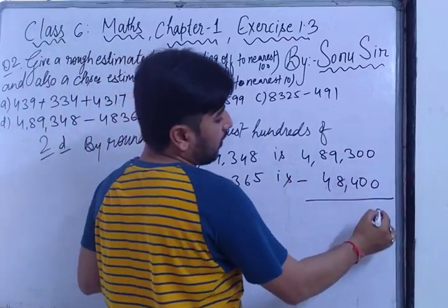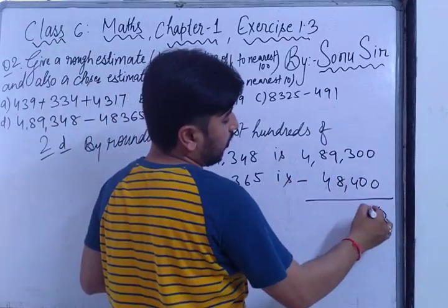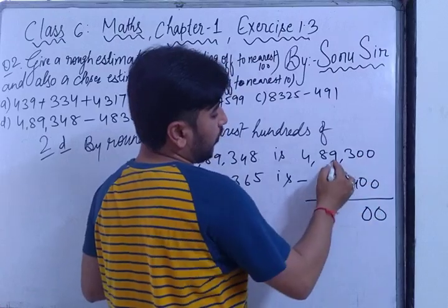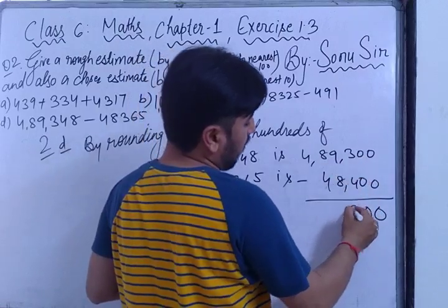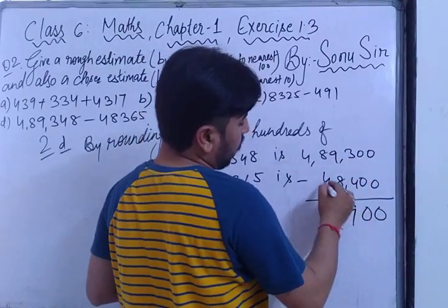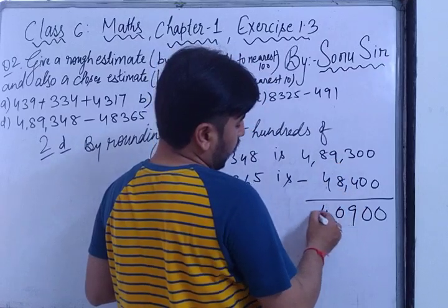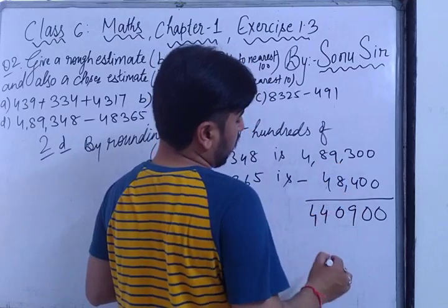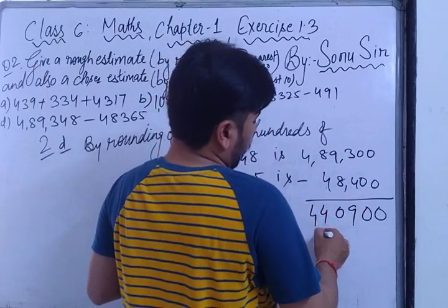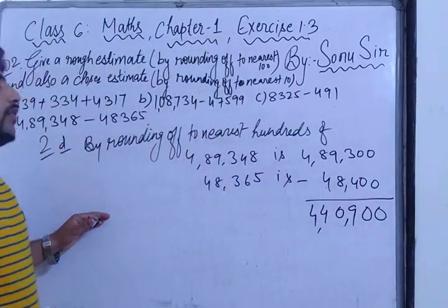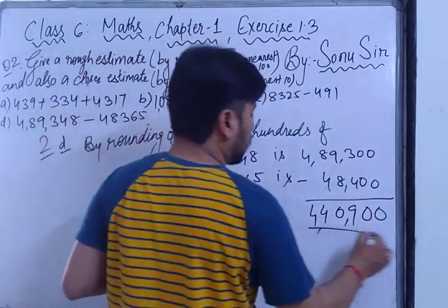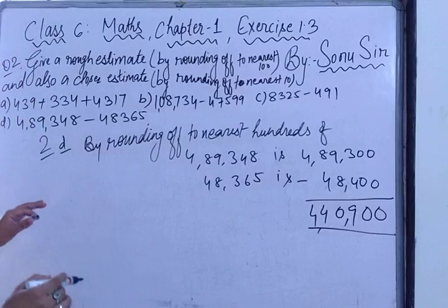Subtracting 489300 minus 483700: borrowing where needed, the answer is 5600. Now for rounding nearest to tens.